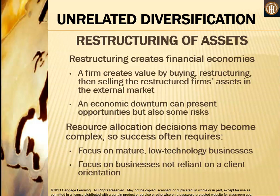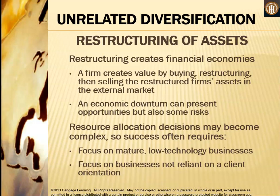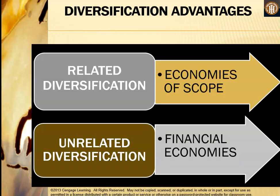Restructuring assets creates financial economies: a firm creates value by buying, restructuring, then selling the restructured firm's assets in the external markets. An economic downturn can present opportunities but also risks. Resource allocation decisions may become complex, and success often requires a focus on mature, low-technology businesses not reliant on a client orientation. To summarize: related diversification gives you economies of scope, while unrelated diversification gives you financial economies.